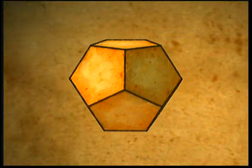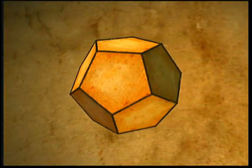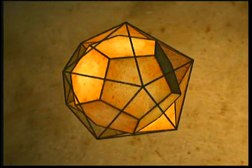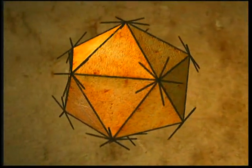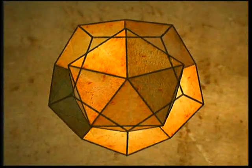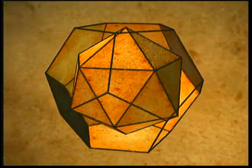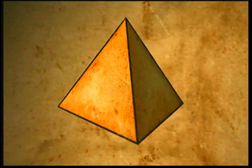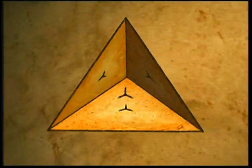The dodecahedron also has a dual with the icosahedron. The vertices of a dodecahedron will fit perfectly along the midpoint of the faces of an icosahedron, and the vertices of an icosahedron will fit perfectly along the midpoint of the faces of a dodecahedron. The tetrahedron is its own dual solid, since connecting the midpoints of the faces of a tetrahedron will create another tetrahedron.